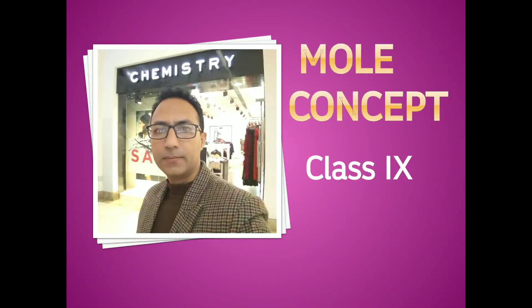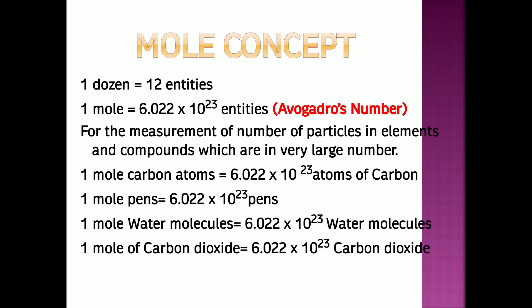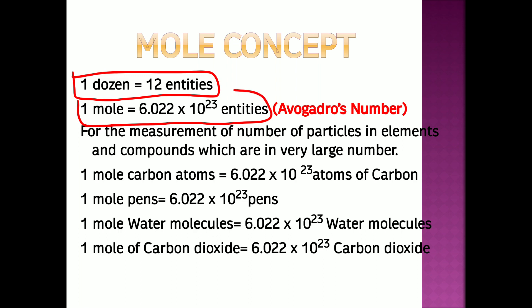Hello everyone, let us quickly revise the mole concept. Just like one dozen is 12 entities — one dozen oranges means 12 oranges, one dozen pens means 12 pens — one mole is a very big number, especially given for elements and compounds, because even a small quantity of any element or compound contains a large number of particles like atoms, molecules, and ions. That is why one mole is 6.022 × 10²³, known as Avogadro's number.